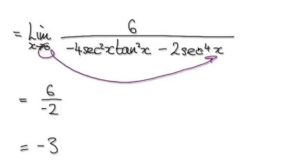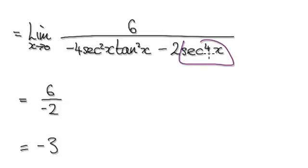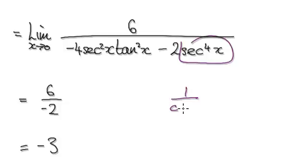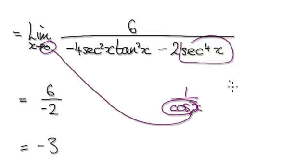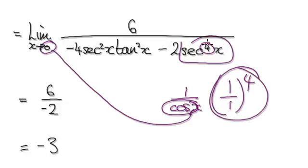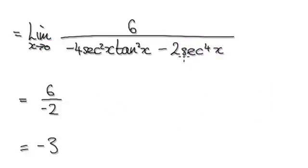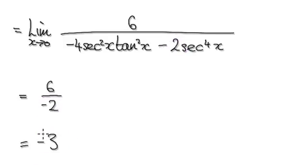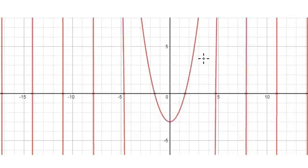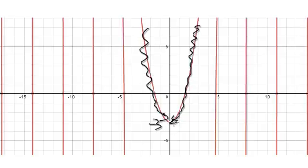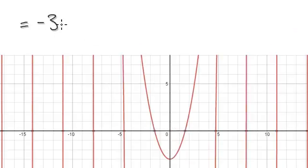Put 0 into here. Remember secant — put 0 into here, it will be 1. This whole thing here will be 1, because secant squared is 1 over cos squared: as x tends to 0, cos is 1, so it's 1 over 1. Power it, and this whole thing is going to be 1. So 1 times negative 2 gives you negative 2, and then the limit is really negative 3. If you get a graph plot and plot it, you can see that as x tends to 0, you are indeed heading towards negative 3. So your answer is negative 3.